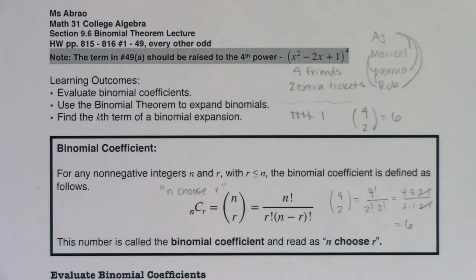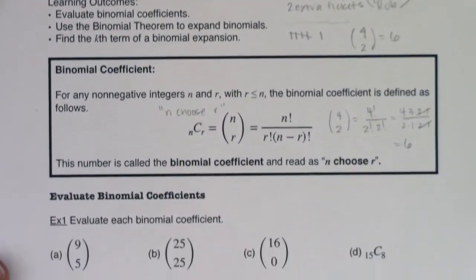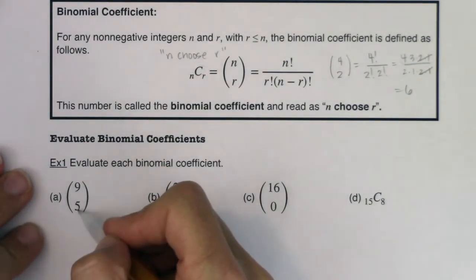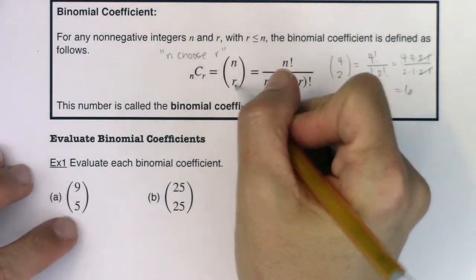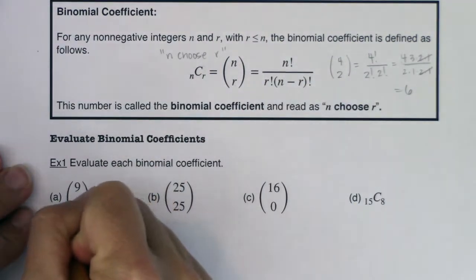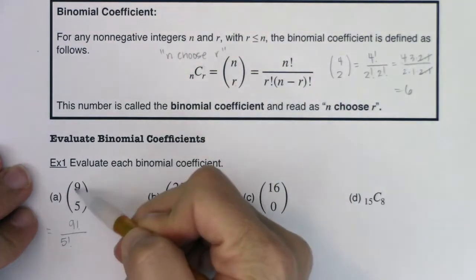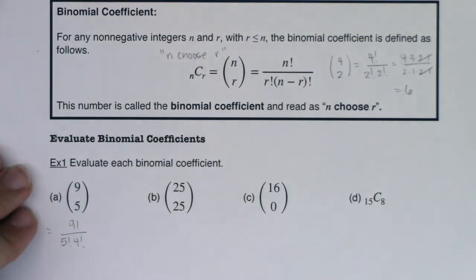Let's practice a few more binomial coefficients. Try to do these without your calculator to get in the habit of canceling factorials. For nine choose five: n is 9, r is 5, so we get 9! over 5! times (9−5)!, which is 9! over 5! times 4!.